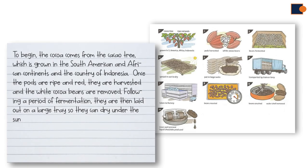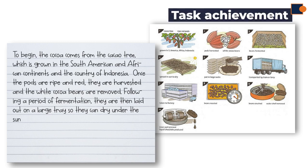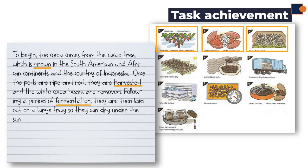Part four: details. We are going to look at a sample example to learn how to write body paragraphs. The main criteria is task achievement — it is how well you explain the key features with accurate information. As we can see in the sample, all four natural stages are explained in detail: growing, harvesting, fermenting, and finally drying in the sun.